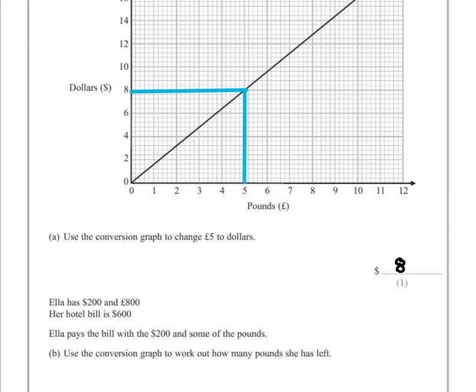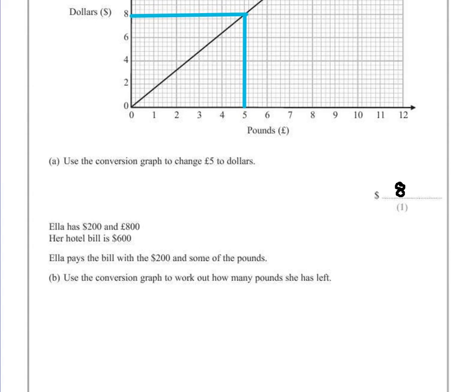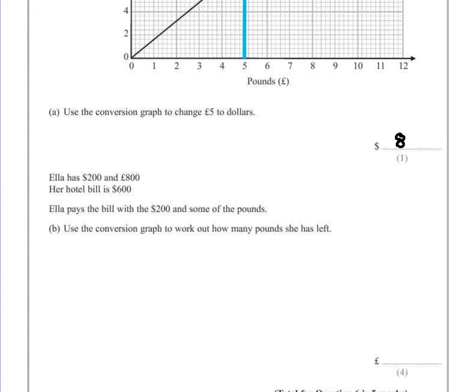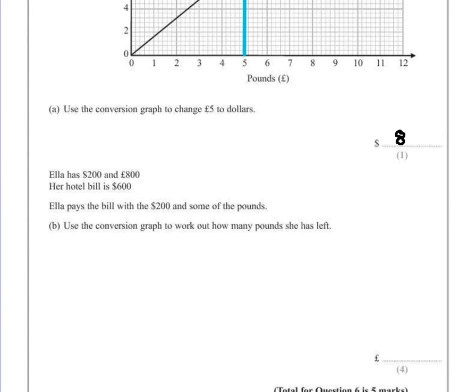Ella has two hundred dollars and eight hundred pounds. Her hotel bill is six hundred dollars. Ella pays the bill with two hundred dollars and some of the pounds. Part B: use the conversion graph to work out how many pounds she has left.